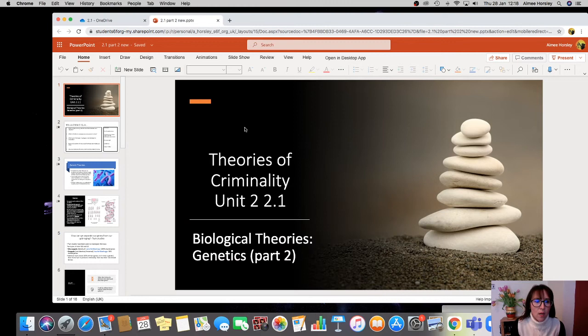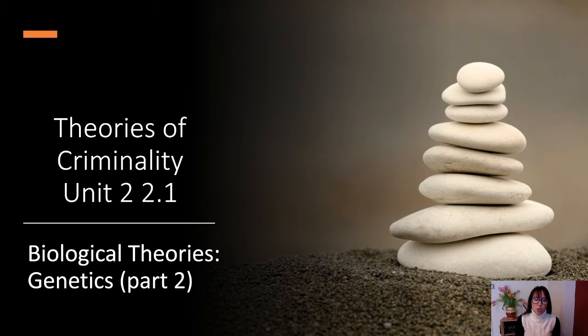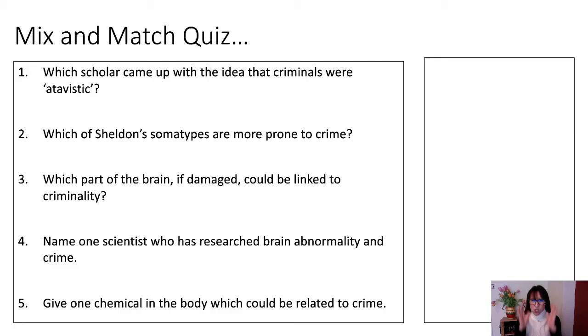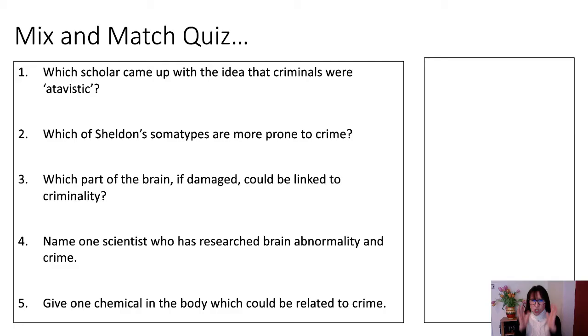So, theories of criminality, unit 2, 2.1 biological theory — genetics, part 2. In an exam this is all together; I only split it so the video isn't too long to work through. Just to get your brains going, I'd like you to have a go at this quick mix-and-match quiz.